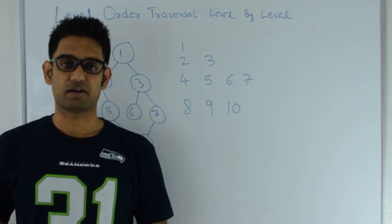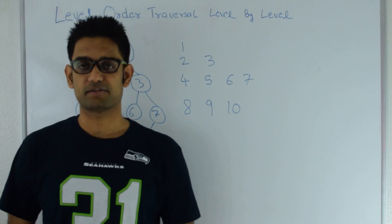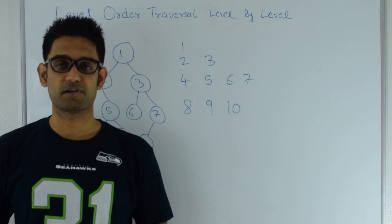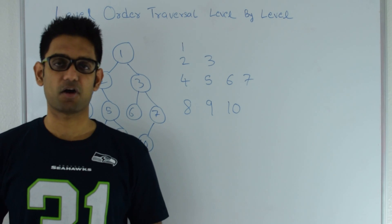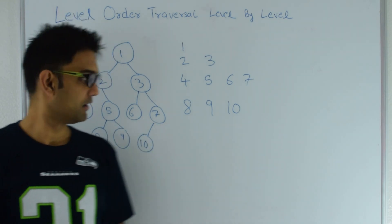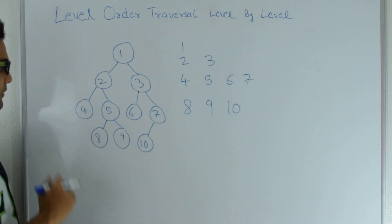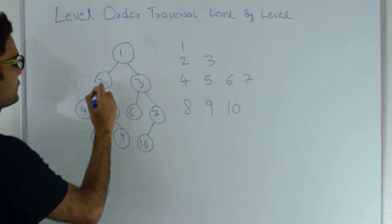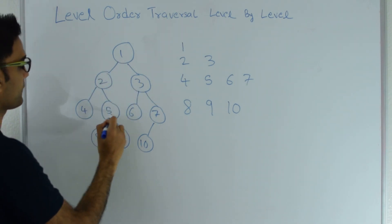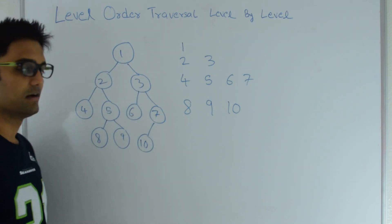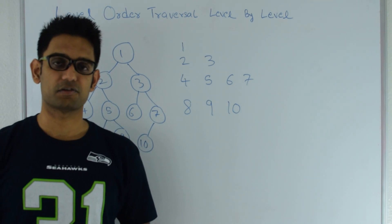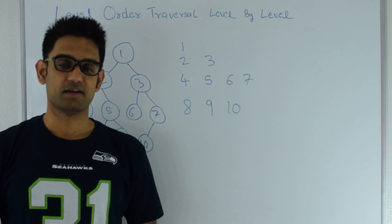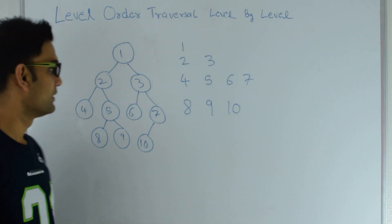Hello friends, my name is Tushar and today we are going to discuss the question: level by level printing of binary tree. In my previous video we talked about level order traversal of a binary tree. For this binary tree the level order traversal is 1, 2, 3, 4, 5, 6, 7, 8, 9 and 10. So this question is slightly different in the sense that you need to print every level in a new line.